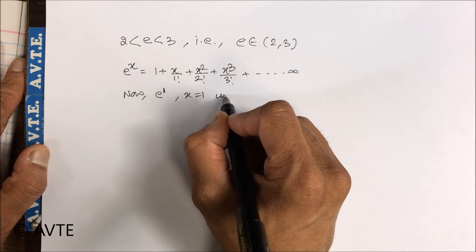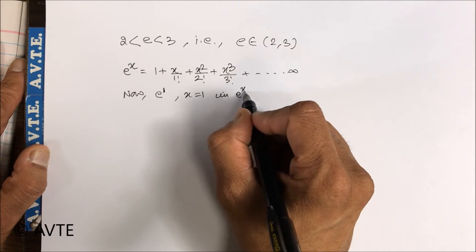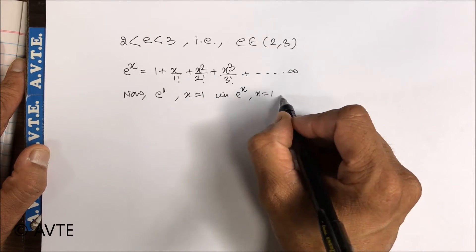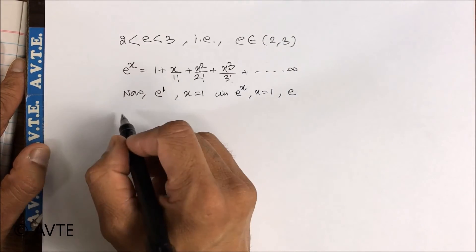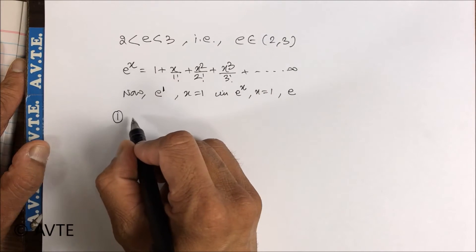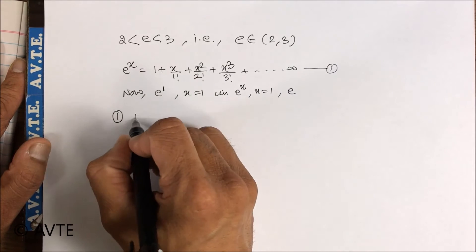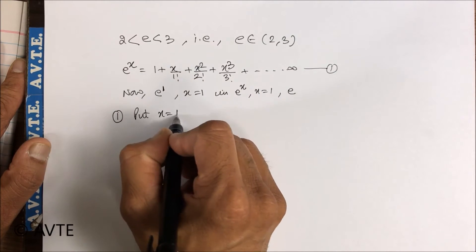So when in e to the power x you put x is equal to 1, it becomes e. Now in the expansion, in the given expansion, put x is equal to 1 everywhere.